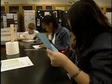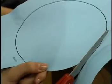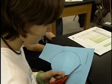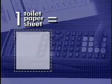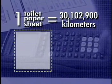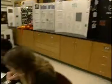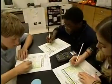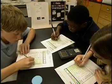Each group will be assigned a planet. Cut out your assigned planet using the planet template. The scale for this activity is one toilet paper sheet equals 30,102,900 kilometers. Using the scale, students complete column four on the scale model chart.